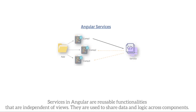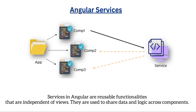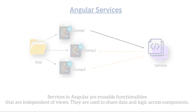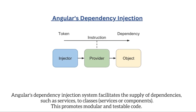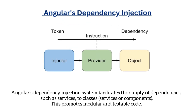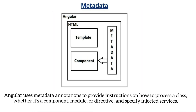Services in Angular are reusable functionalities that are independent of views. They are used to share data and logic across components. Angular's dependency injection system facilitates the supply of dependencies such as services to classes or components, promoting modular and testable code. Angular also uses metadata annotations to provide instructions on how to process a class — whether it's a component, module, or directive — and to specify injected services.